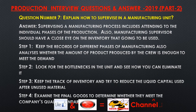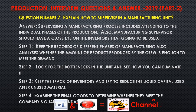Question number seven: Explain how to supervise in a manufacturing unit. Answer. Supervising a manufacturing process includes attending to the individual phases of production. A manufacturing supervisor should also keep a close eye on inventory. Step one: Keep records of different phases of manufacturing and analyze whether the amount of product produced by the crew is enough to meet demand. Step two: Look for bottlenecks in the unit and see how you can eliminate them. Step three: Keep track of inventory and try to reduce the liquid capital tied up in unused material. Step four: Examine final goods to determine whether they meet the company's quality standards.